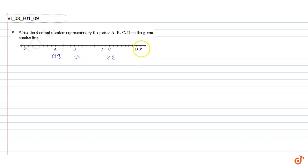D represents one step less than 3, that is 2.9. These are our answers.